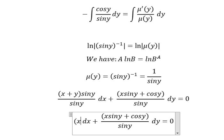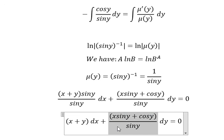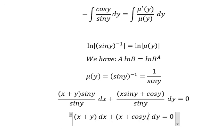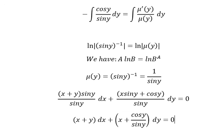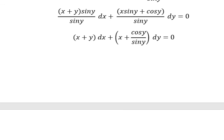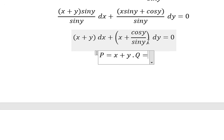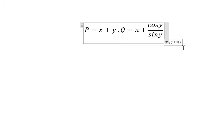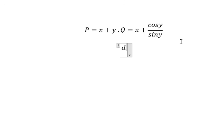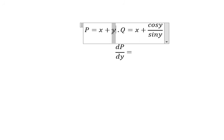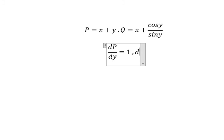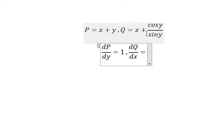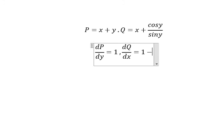After multiplying by 1/sin(y), the new P equals x plus y and the new Q equals x plus cos(y) over sin(y). We now redefine P and Q with these values and take the partial derivative of the new P with respect to y. We get 1, and the partial of the new Q with respect to x also gives 1, so they are equal — the equation is now exact.